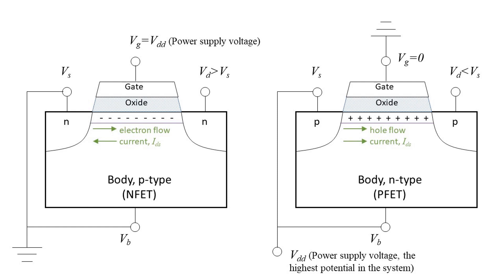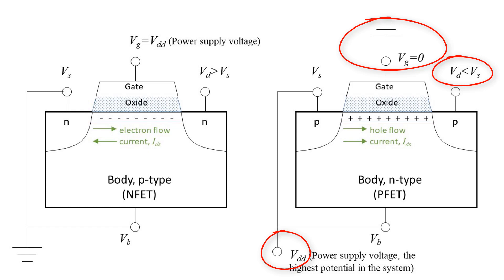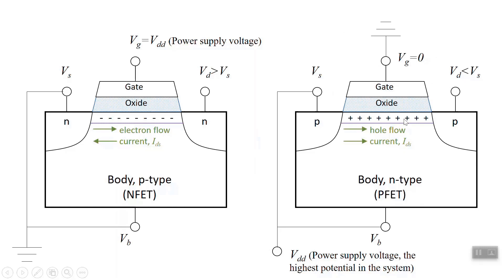For a P-FET, where you have an N-type semiconductor and want an inversion layer of holes, you need a gate bias at lower potential than the body. Put the body at the power supply voltage and the gate at zero. The drain is at some potential between the gate and the body — lower than the source, which is at V_DD. Holes are attracted to lower potential, so holes flow to the right, and since holes are positive, the drain-source current flows in the same direction. For a P-FET, current flows from source to drain; for an N-FET, from drain to source.